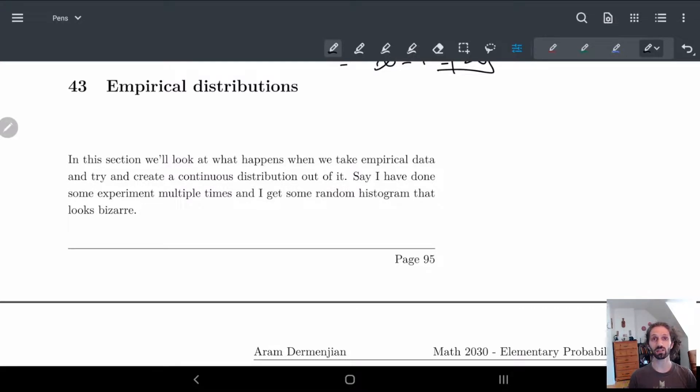What we're going to do in this section is look at what happens if we have empirical data, like data that's given to us from some source, and we try and create a continuous distribution out of it. In this case, think of this as I have some binomial distribution and I try to make a continuous distribution out of it. In the binomial case it was easy to see this is just a normal distribution. But that's not always necessarily the case.